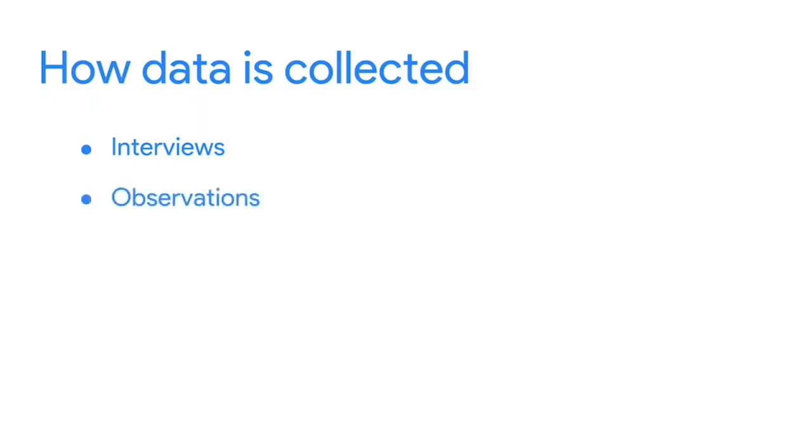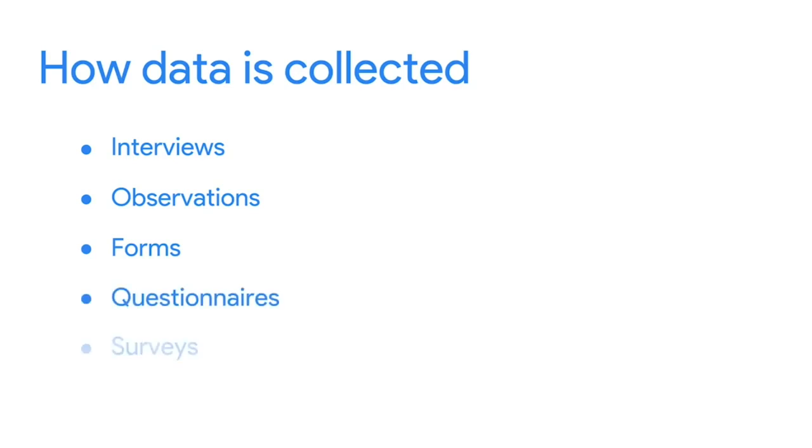Even something as simple as an interview can help someone collect data. Imagine you're in a job interview. To impress the hiring manager, you'll want to share information about yourself. The hiring manager collects that data and analyzes it to help them decide whether to hire you or not. But it goes both ways — you could also collect your own data about the company to help you decide if it's a good fit for you. Scientists also generate data. They use a lot of observations in their work, like collecting data by studying animal behavior or looking at bacteria under a microscope. Forms, questionnaires, and surveys are commonly used ways to collect and generate data. Data that's generated online doesn't always happen directly.